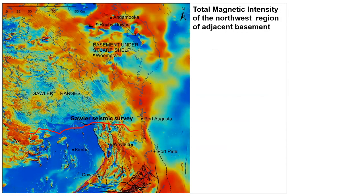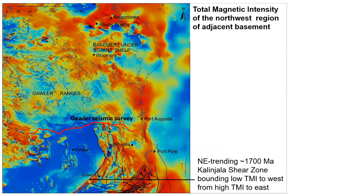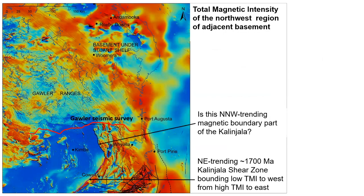Looking at the northwestern marginal region, we have metasediments of the eastern part of the Gawler Craton. A very important boundary is the northeast-trending approximately 1700 million year old Kalinjala Shear Zone, which forms a boundary between low-magnetic rocks to the west and high-magnetic rocks to the east. In the northern part the boundary changes to a north-northwest orientation, and I would question whether this is still part of the Kalinjala, arguing instead that it is a younger fault that truncates it.